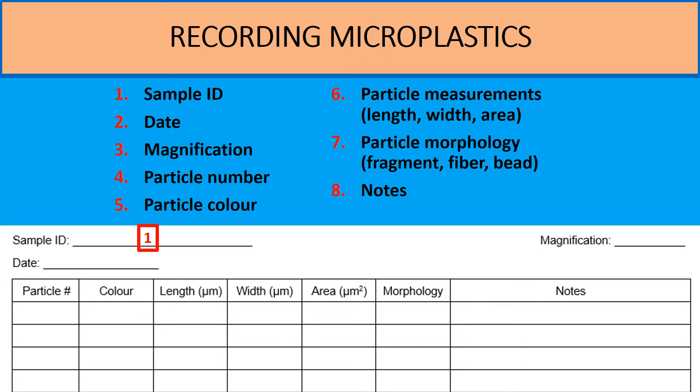The first being the sample ID, and then the date and the magnification. Then you're going to record the particle parameters such as the particle number, the color of the particle, the particle measurements including length, width, and area. And then the particle morphology, which is whether it's a fragment or a fiber or a microbead. And then finally if you have any notes that you'd like to record about the particle, then you can put them there.